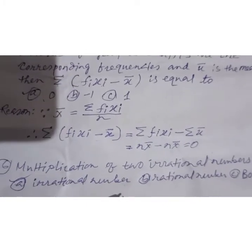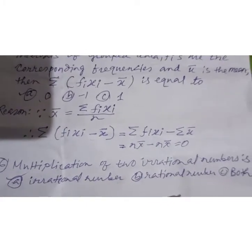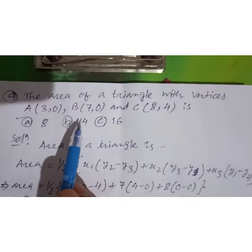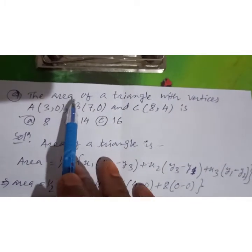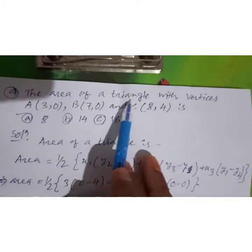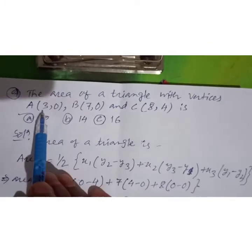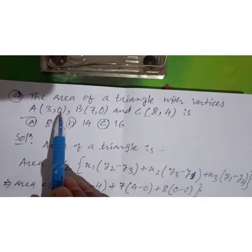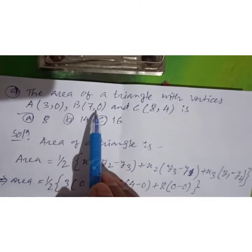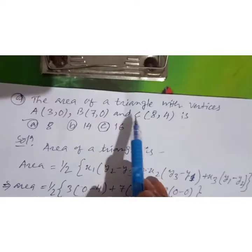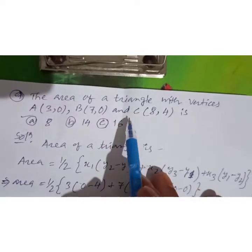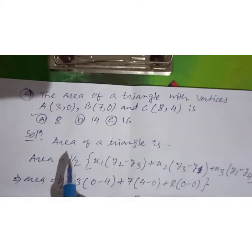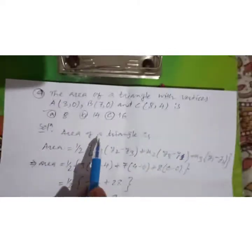The multiplication of two irrational numbers is not always irrational — it can be rational. Now for the area of a triangle with vertices A(3, 0), B(7, 0), and C(8, 4).